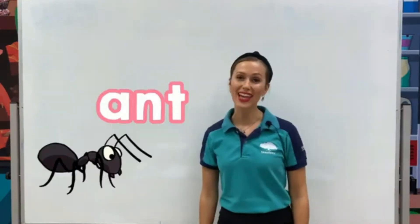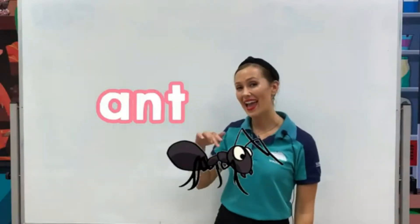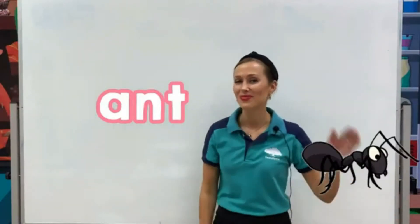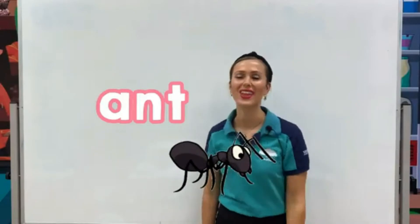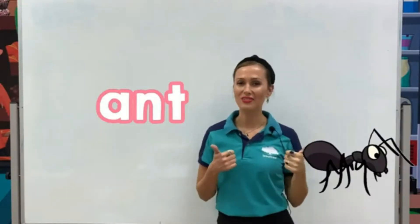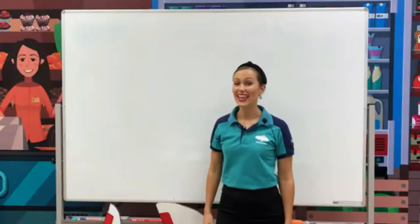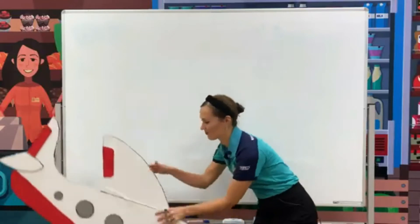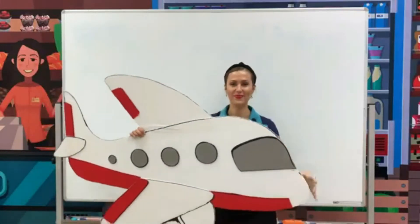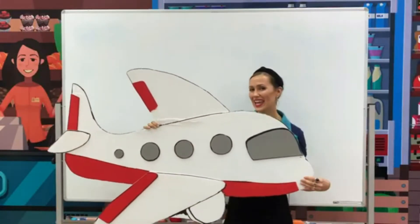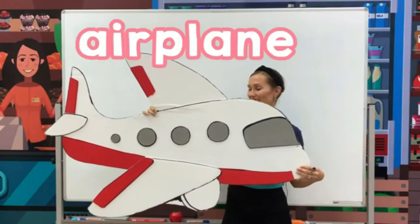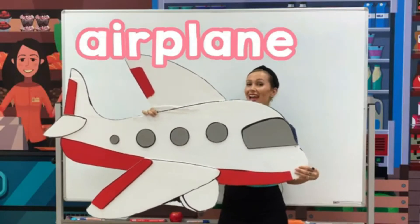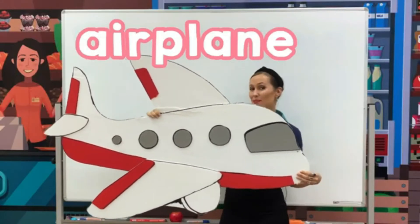Well done! And letter A is for Ant. Can you repeat? Eh, eh, Ant. Well done! And letter A is for Airplane. Can you repeat after me? Eh, eh, Airplane.